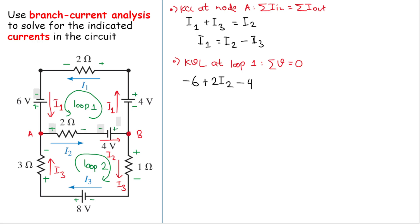There is another 4-volt battery and the loop enters from the negative terminal, so we have minus 4. Then for the 2-ohm resistor, the loop enters from the positive terminal, so we have positive 2 multiplied by the current through it, which is i1. All of that equals zero.